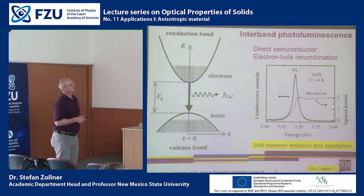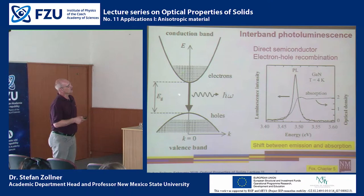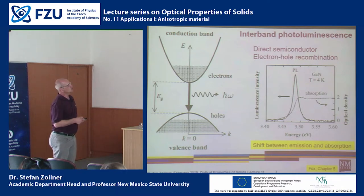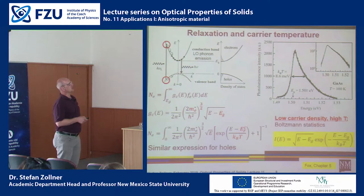Electrons and holes are fermions, and therefore we observe not only recombination at the zone center but also recombinations for k not equal to zero, because due to the Pauli exclusion principle the electrons have a distribution.